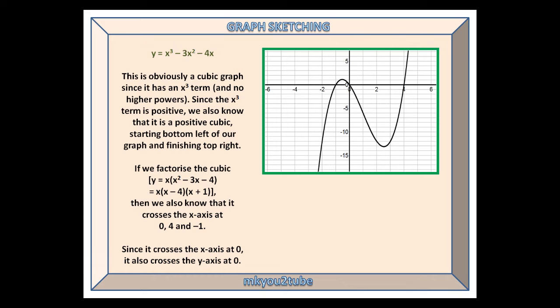If we factorise the cubic by taking out the x and then factorising the quadratic, we get y equals x times (x minus 4) times (x plus 1). So we know that it crosses the x-axis at 0, 4, and minus 1. And since it crosses the x-axis at 0, it also crosses the y-axis at 0.